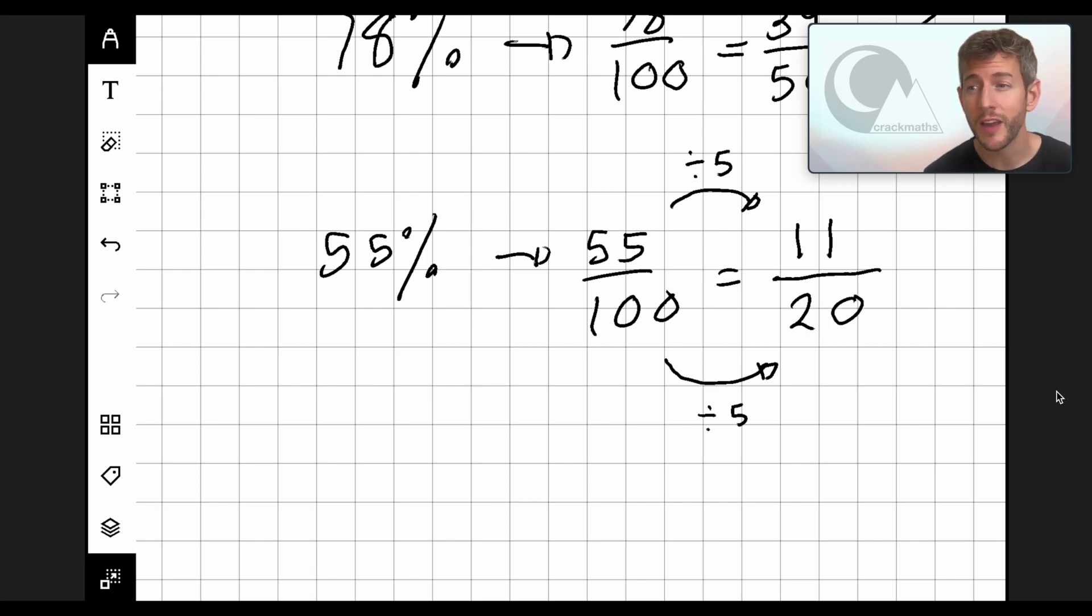Now, 11 and 20 do not appear in any of the same times tables. 11 is in fact what we call a prime number, so we can't simplify this fraction anymore. So 55% is equal to 11 over 20 as a fraction in its simplest form.